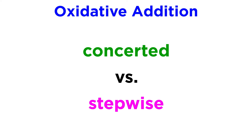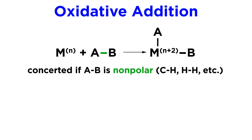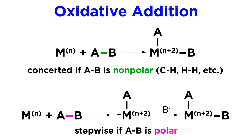There can also be stepwise oxidative additions. Whereas the concerted mechanism is more common for nonpolar bonds like C-H or H-H bonds, the stepwise mechanism will be more common for polar bonds. This is a two-step process. For the first step, the metal will interact with the less electronegative end of this polar molecule, kicking off the rest. The A fragment will now be a ligand on the metal, which will now have an oxidation state that is two greater than before, and this intermediate will have a formal charge that is one greater than before as well. Then the nucleophilic portion will attack and coordinate, thus restoring the original charge.